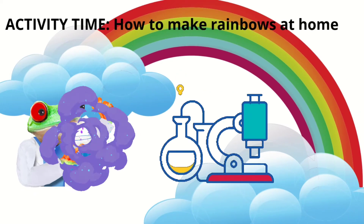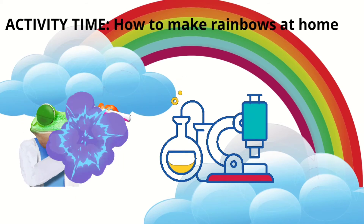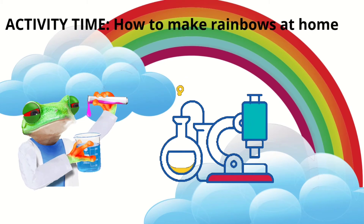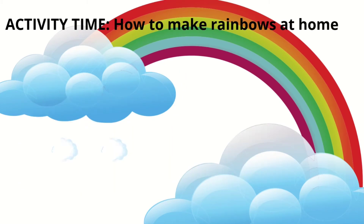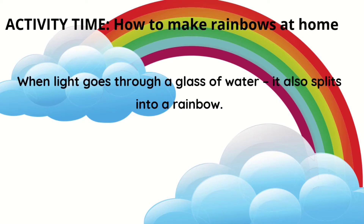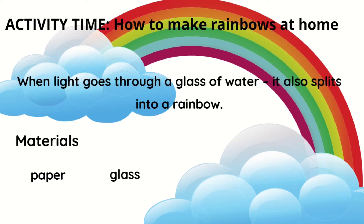You may try this activity at home. This is how to make rainbows at home. When light goes through a glass of water, it also splits into a rainbow. The materials that we need are as follows: paper, glass, water, and tape.